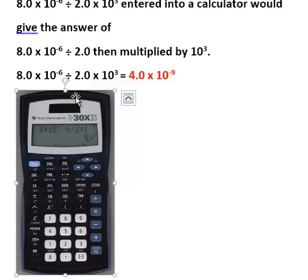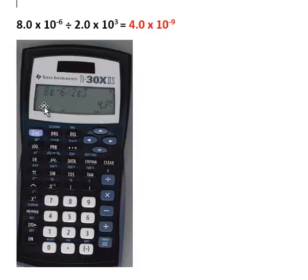If instead we do 8 EE negative 6 divided by 2 EE 3, then we get the correct answer. Here we see 8, and the way that I entered this into the calculator, I hit 8, and even though I hit .0, the calculator doesn't really recognize the difference between 8 and 8.0. Then second function EE - I don't hit times EE, I don't hit times 10 and then E, I just hit 8, second function EE, so we see 8E, then the power, which is negative 6.